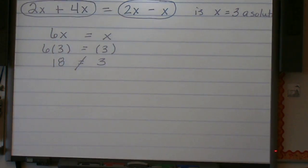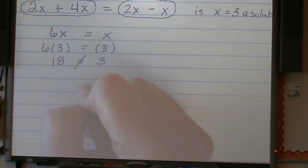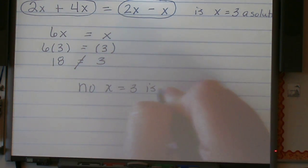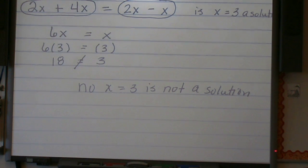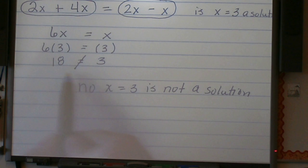And no, 18 is not equal to 3. So no, x equal to 3 is not a solution. And again, right now, we're not trying to find the value for x. We're just trying to determine the solution. Is this value that's already stated a solution? Does this value make the statement true? And no, x equal to 3 does not make this statement true. So therefore, x equals 3 is not a solution.